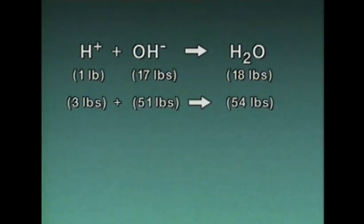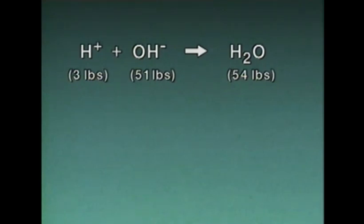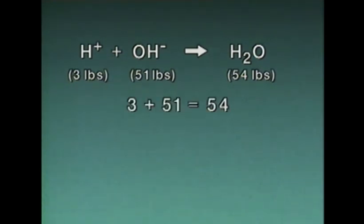One way to check the math is to make sure that the total weights on each side of the equation are the same. Remember, in any reaction, what goes in has to come out. So the total weight of the reactants has to equal the total weight of the products. In this instance, there are 54 pounds of water on the right and 3 plus 51, or 54 pounds of reactants on the left. The numbers work out correctly.